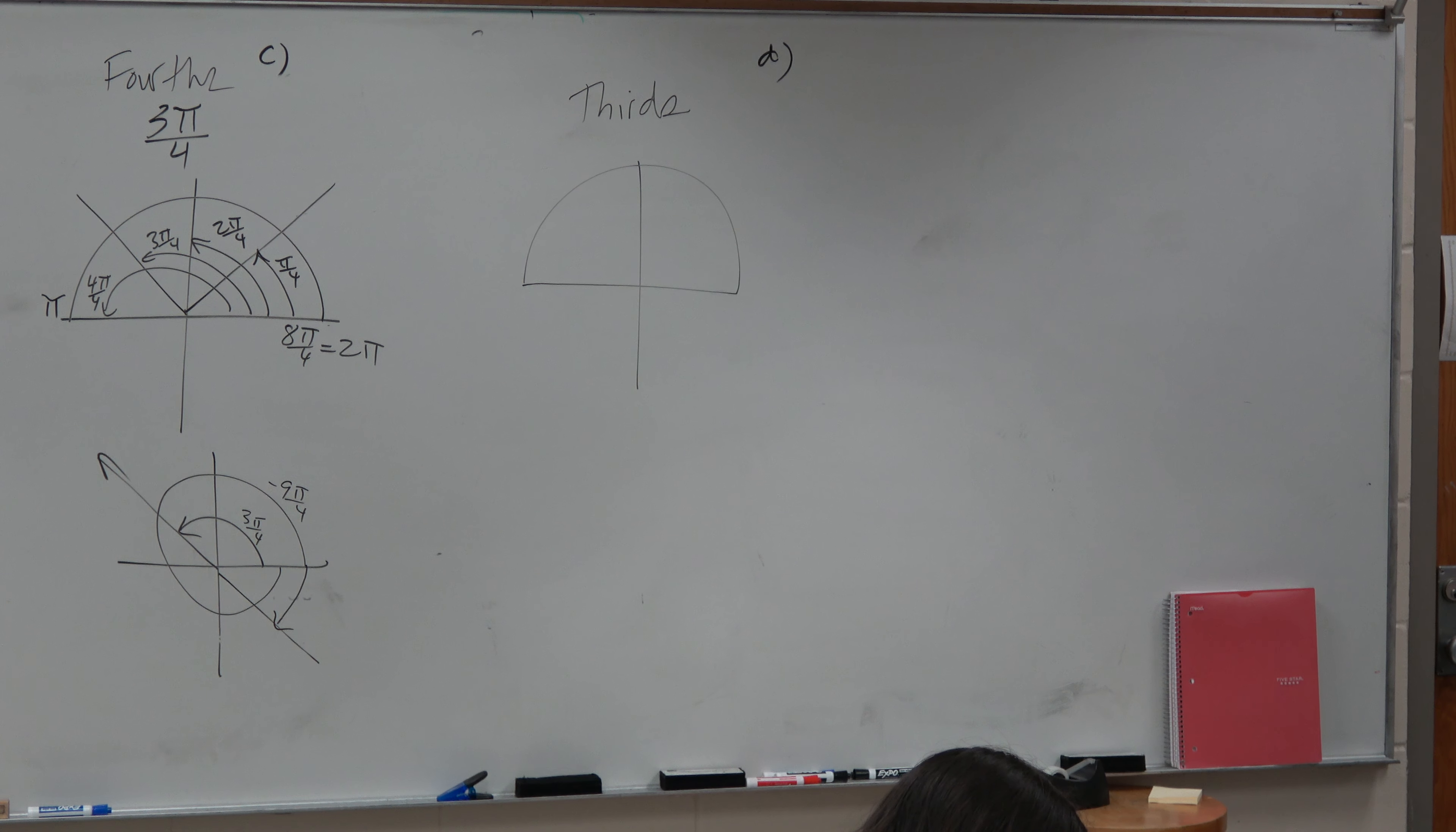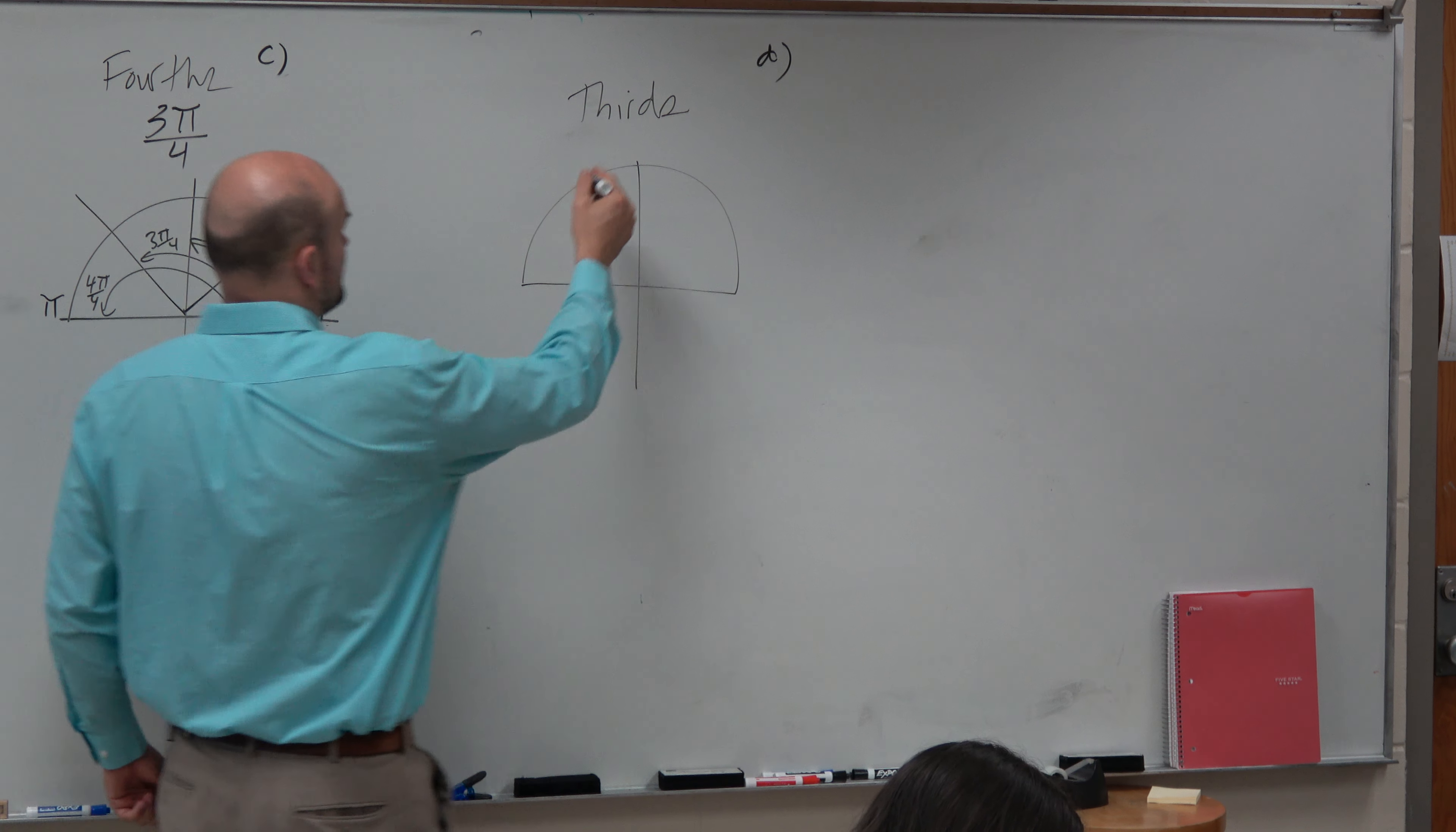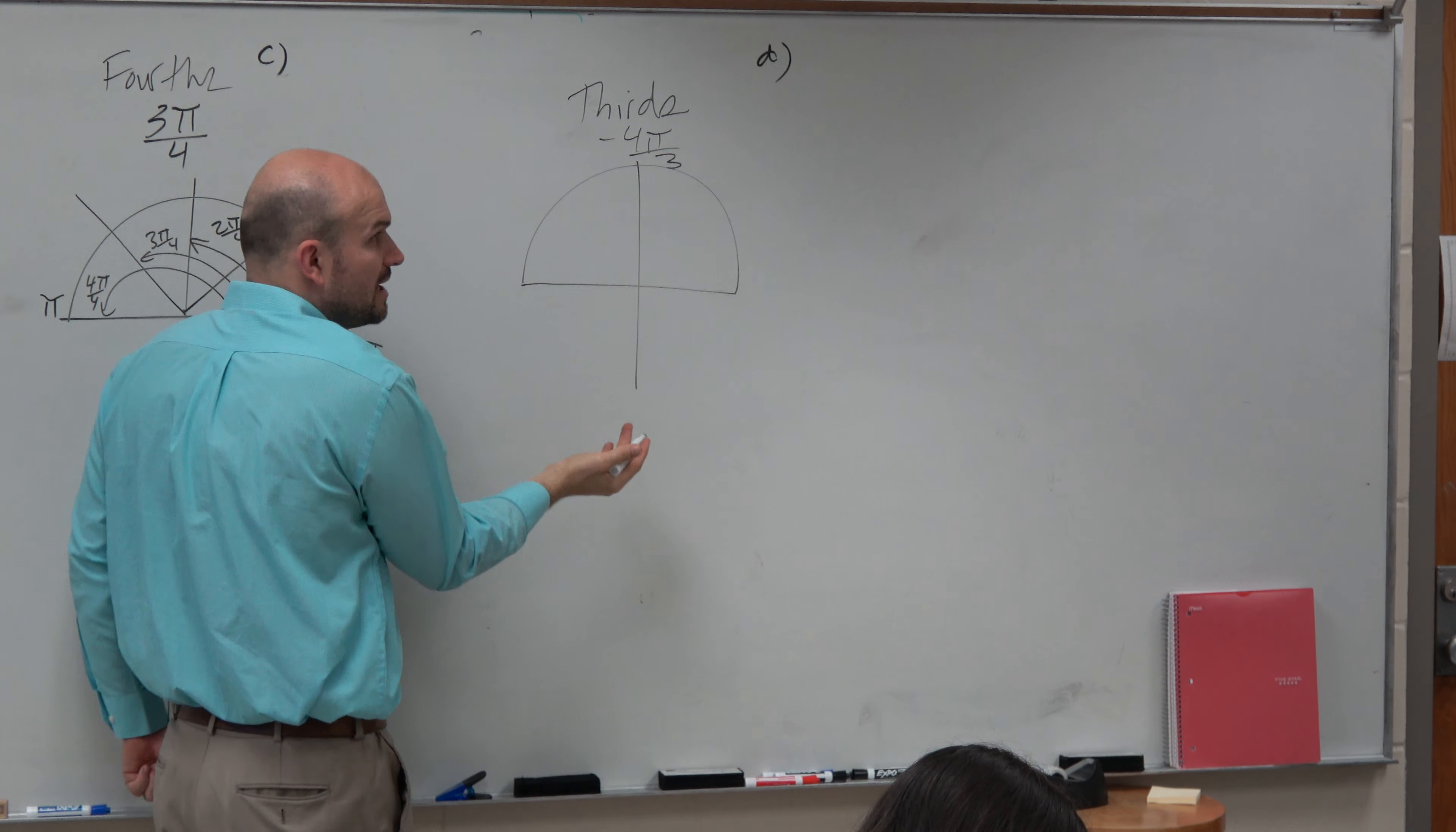All right. So if I was going to graph negative 4π over 3, again, we know that in standard form, obviously, we have an x and y-axis, right?